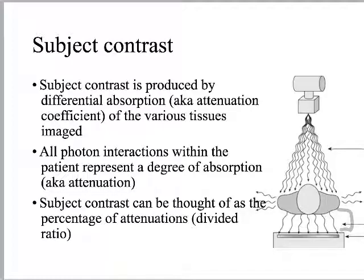That's where subject contrast lives. The reason I'm pointing that out is because once this image is processed, contrast is going to become something different — we're going to start referring to it as image contrast. As you've probably already seen, we can jack with the image contrast; we can window, we can level, we can change all sorts of stuff, make the whites black and the blacks white. What we can't mess with is the subject contrast — what lives right in that remnant signal.